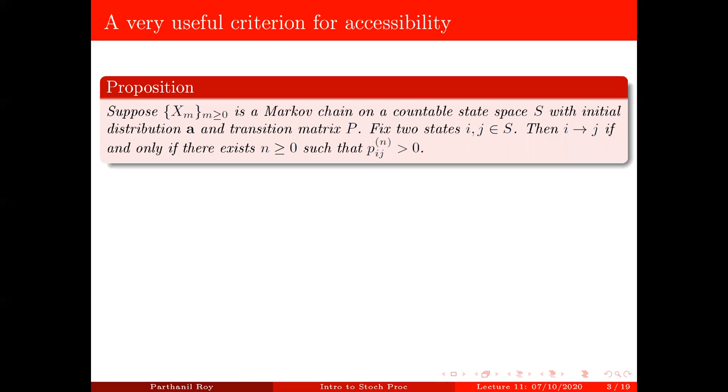So how do we check whether i leads to j or not? And as we talked about last time, it's completely determined by the transition matrix. All you have to do, you have to compute its powers and check that i leads to j in any of the powers of p, in the sense that if there exists an n, non-negative integer n, such that the n step transition probability from i to j is positive. If that happens, then i leads to j. And conversely, if i leads to j, then some n step transition probability has to be positive.